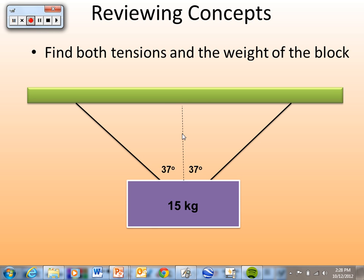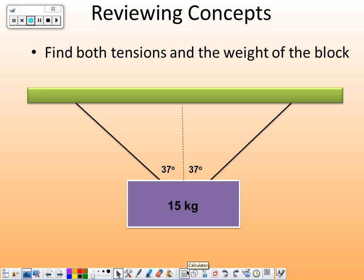Alright, in this problem, what we've got is sort of a sign type of thing hanging on two ropes, both of which make the same 37 degree angle with our vertical right here. Our goal is to find the tension and the weight of this block or sign or whatever this happens to be.